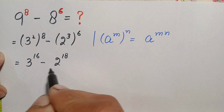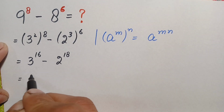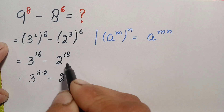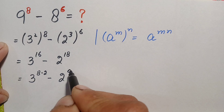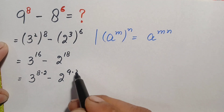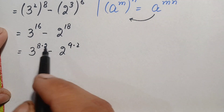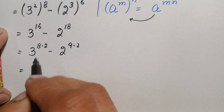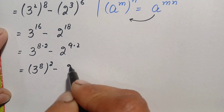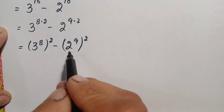Notice both bases are prime numbers now. Next, we can rewrite these two powers: 3^16 can be written as 3 raised to power 8 times 2, which is 16. And 2^18 can be written as 2 raised to power 9 times 2, which is 18. Using the exponential identity again, this becomes (3^8)² minus (2^9)².